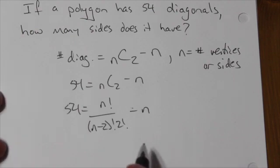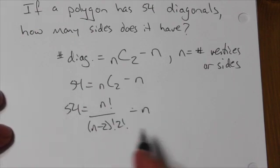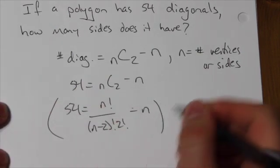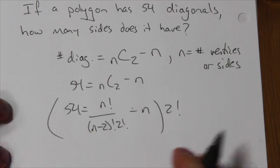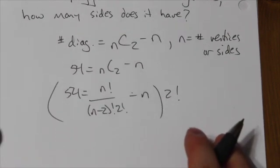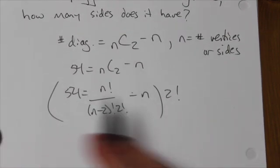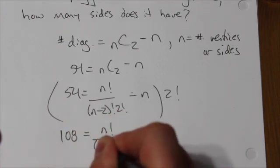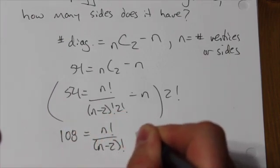Now, I would like to get rid of the fraction part here. I can see that there's a 2 factorial in the denominator here. So I'm going to multiply everything through, first of all, by that 2 factorial, which turns out to be just 2. So I multiply the left-hand side, and that gives me 108, is equal to n factorial over n minus 2 factorial.